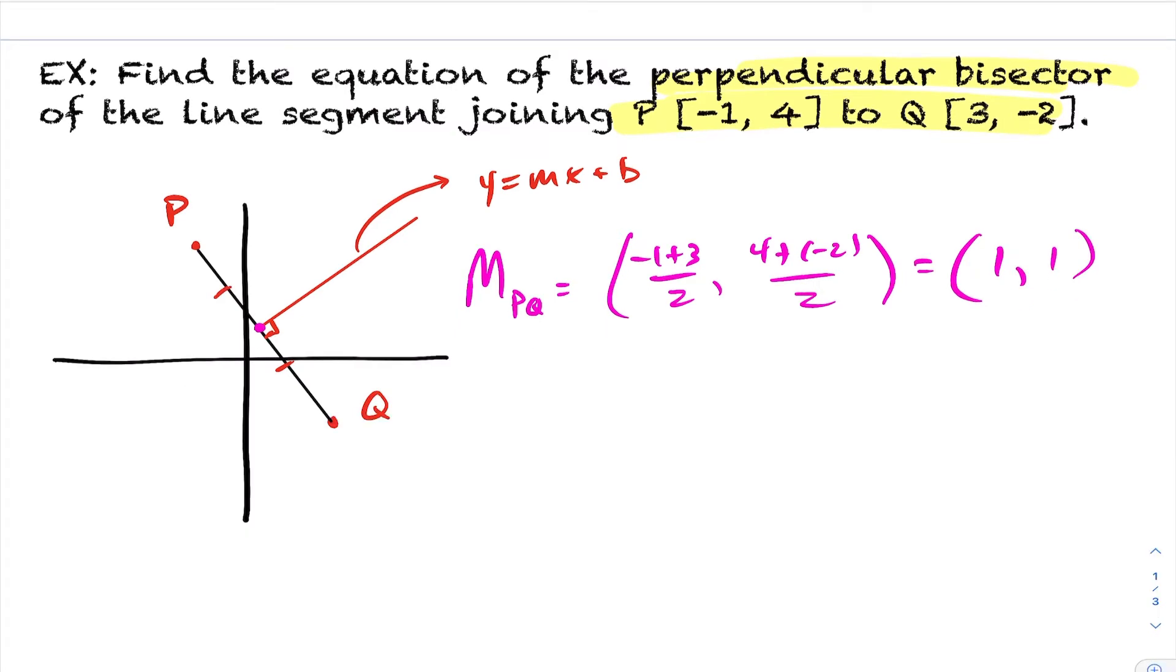Okay, so now I have the midpoint, but I need something else to actually calculate the equation of this line. Well, how can I find the equation of a line? Am I able to find the slope of this line? Not directly, but I know that they're connected because the slope of line segment PQ is perpendicular to the slope of line segment, my perpendicular bisector. So I'm going to calculate the slope here. So I'm going to use lowercase m, slope of PQ.